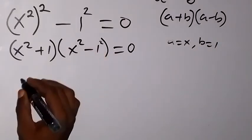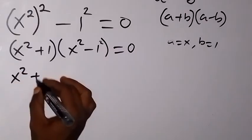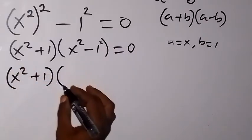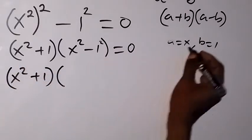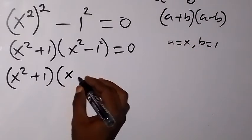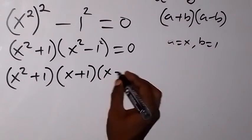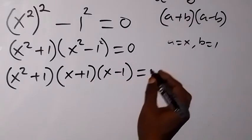So we can write this second bracket again. We have x square plus 1, then into, when we write this one in form of difference of squares, we have x plus 1, then times x minus 1, which is equal to 0.